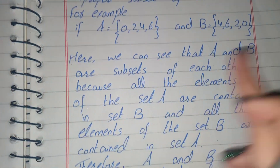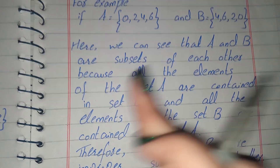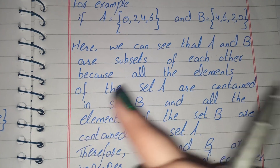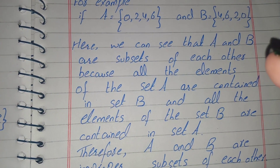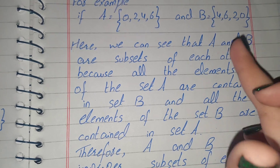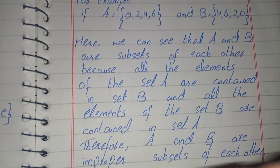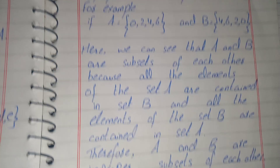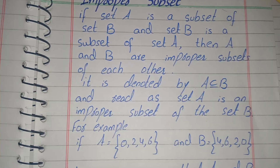From the example you can clearly see that A and B are subsets of each other, because all the elements of set A are contained in set B and all the elements of set B are contained in set A. Therefore A and B are improper subsets of each other.